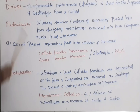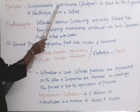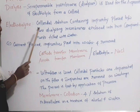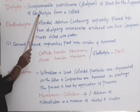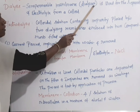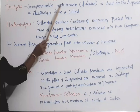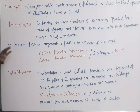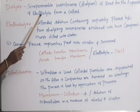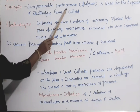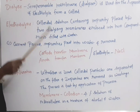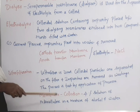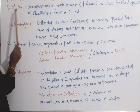In dialysis, a semi-permeable membrane called a dialyzer is used for the separation of electrolytes from the colloid. The colloidal solution containing the electrolyte impurity is taken in a bag which is suspended in a trough of flowing water. The electrolytes in the colloid diffuse through the semi-permeable membrane and are washed away along the flowing water.